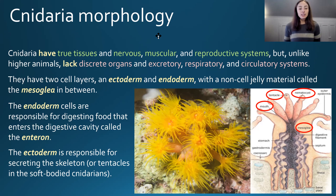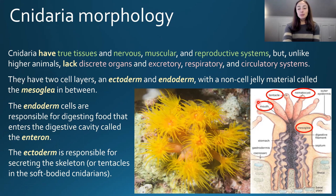The endoderm cells are responsible for digesting food that enters the digestive cavity or enteron. The ectodermic cells are responsible for secreting the skeleton in cnidaria that have a skeleton, like corals, but in soft-bodied cnidaria the ectoderm is just the outer layer of skin and secretes things like tentacles instead. In the diagram we can see the mouth or enteron, the stomach, the mesoglia between the endoderm and ectoderm, and the nematocytes coating the tentacles.